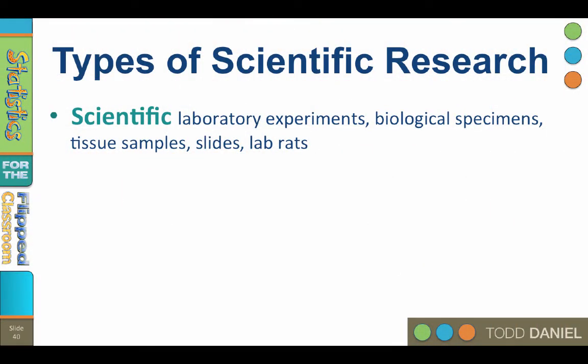Scientific research is done in a variety of settings and with a variety of techniques. In its purest form, scientific research uses laboratory experiments, such as with biological specimens, tissue samples, or slides, or using laboratory rats — the stereotypical lab rats.